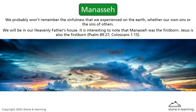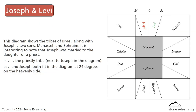We will be in our heavenly Father's house. It is interesting to note that Manasseh was the firstborn — Jesus is also the firstborn, Psalm 89:27 and Colossians 1:15. The diagram shows the tribes of Israel along with Joseph's two sons, Manasseh and Ephraim. It is interesting to note that Joseph was married to the daughter of a priest. Levi is the priestly tribe, next to Joseph in the diagram. Levi and Joseph both fit in the diagram at 24 degrees on the heavenly side.